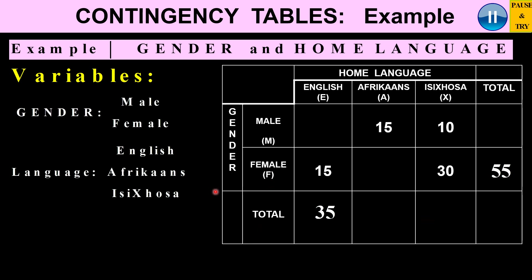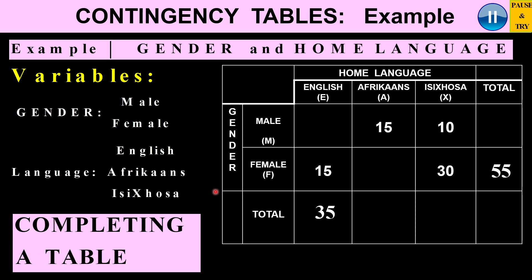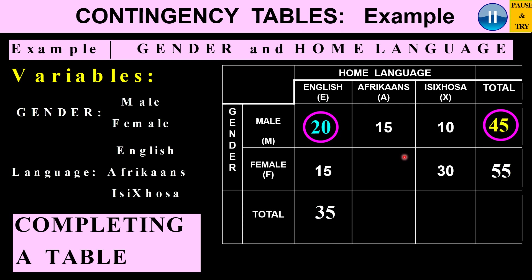I've taken an example and omitted some of the data, so we want to complete the table. If I look at this column, I can work out the missing value. Because I've got a total of 35, 35 minus 15 gives me 20. Now if I look at this row, the total is missing, so I find the sum of 20, 15, and 10, which gives me 45.